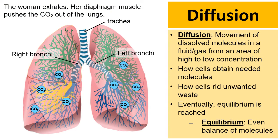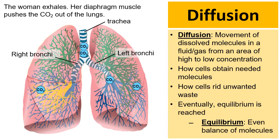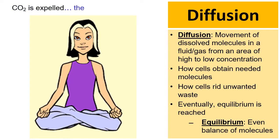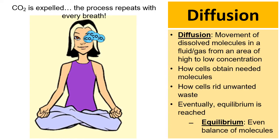As the woman exhales, the carbon dioxide is pushed up her trachea and eventually out her nose and mouth. We have a muscle underneath our lungs called the diaphragm that helps aid in this exhaling process. The carbon dioxide is expelled into the atmosphere, and this process repeats with every breath — she inhales oxygen, and a moment later exhales carbon dioxide. Diffusion plays an important role in the journey of oxygen and carbon dioxide.